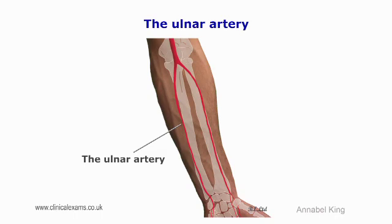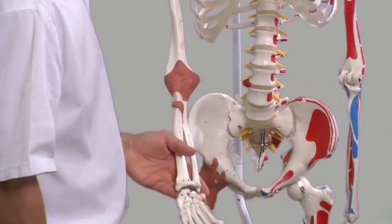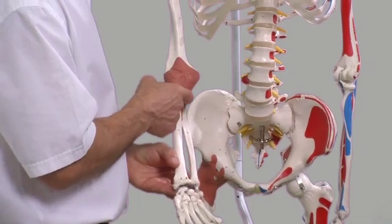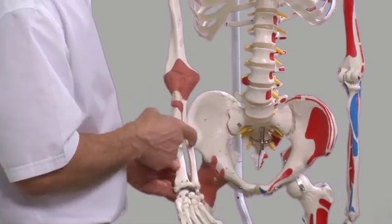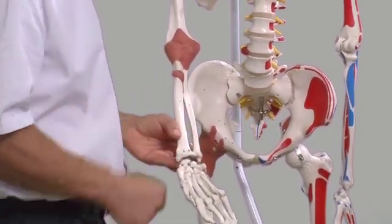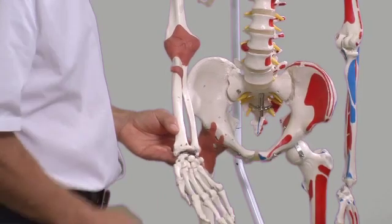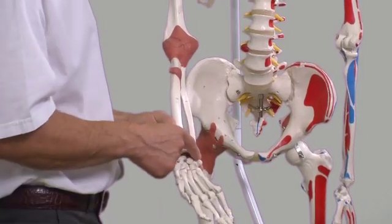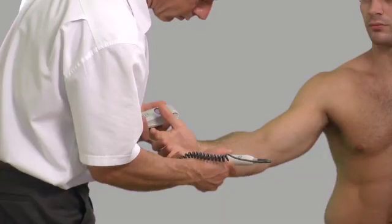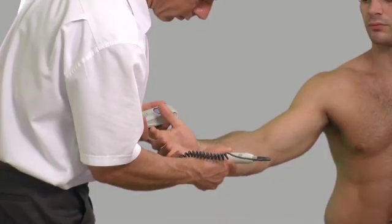The ulnar artery can also be palpated at the wrist. Palpate distal to the ulnar styloid process over the pisiform. The pulsations are weaker, as this is a smaller artery and also diminished by the palmar aponeurosis.